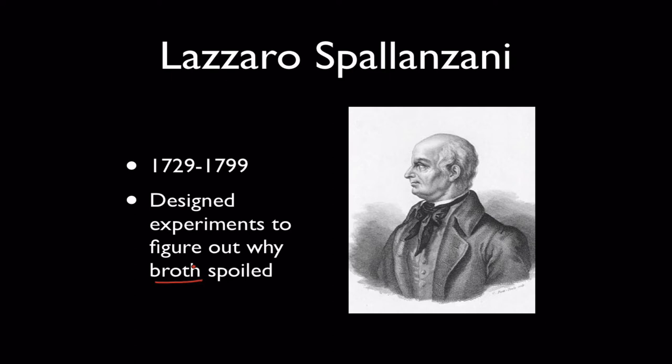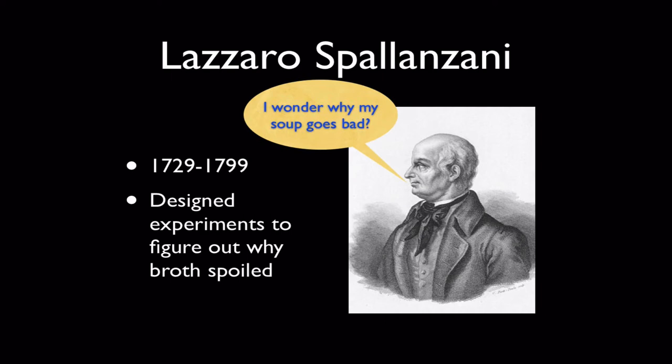If you took chicken bones or vegetables, boiled them in water, and strained out all the solid parts, you'd have a simple soup called broth. Broth is highly spoilable — if you let it cool and sit at room temperature, it will go sour in a remarkably short period of time, just like milk. Spallanzani was interested in why stuff like broth spoiled.